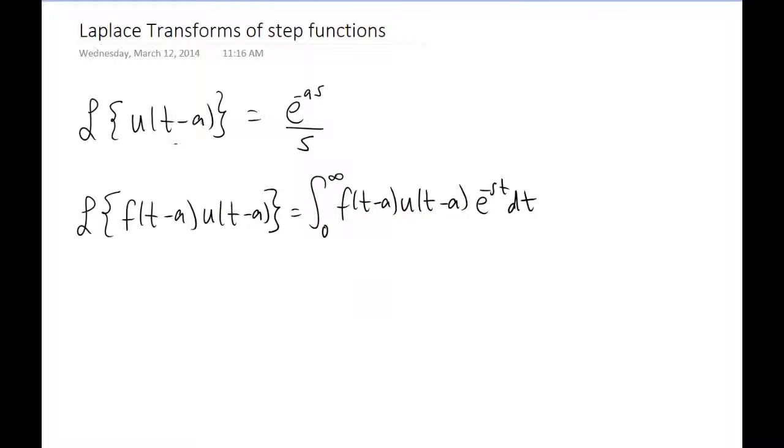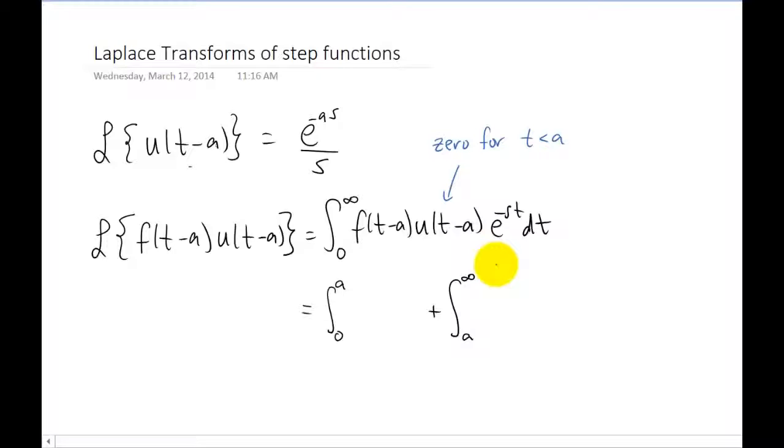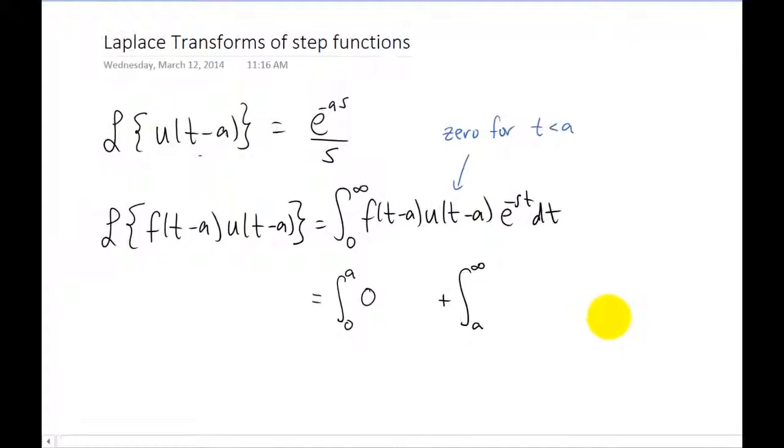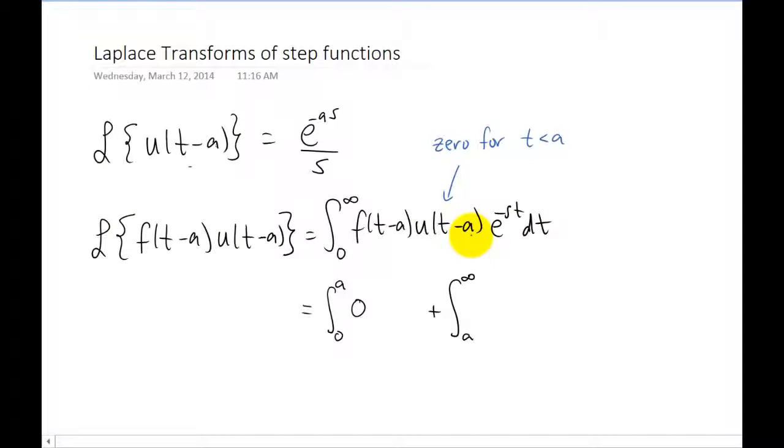Now the first thing I want to do here is think about what this function looks like: F of t minus a, u of t minus a. I'm going to make the argument that we should split up this integral into a piece from 0 to a and a piece from a to infinity. The piece from 0 to a is just going to be the integral of 0. And the piece from a to infinity, the value of the step function is just 1.